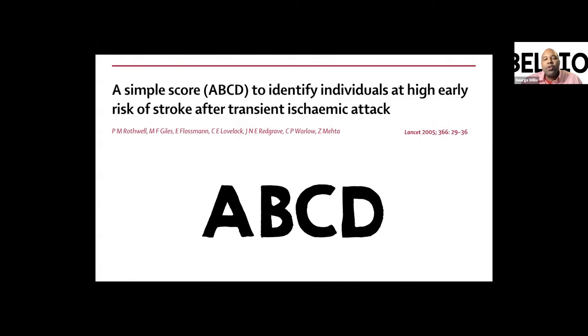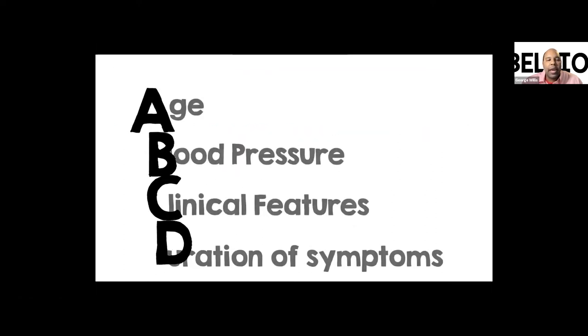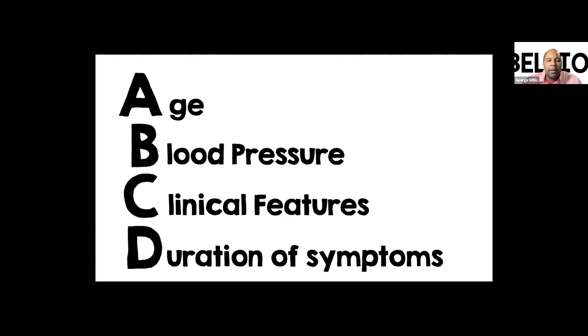What risk scores can we use to risk stratify TIA patients to see if they're at higher risk for developing a stroke? The commonly used one started as the ABCD score, published in 2005. ABCD stands for age, blood pressure (systolic greater than 140 or diastolic greater than 90), clinical features such as unilateral extremity weakness or aphasia, and duration of symptoms — 10 minutes, longer than 10 minutes, or longer than 24 hours.